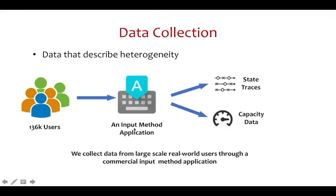For the data, we collected large-scale real-world data from 136,000 users through an input method application. The data are composed of two parts: the state traces for describing state heterogeneity, and the capacity data for describing hardware heterogeneity. In total, the data contain 180 million entries, account for 111 GB storage, and cover 296 types of devices.